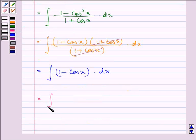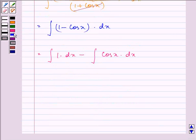So it can be written as integral of 1 dx minus integral of cosx dx, which is further equal to x minus sinx plus c.